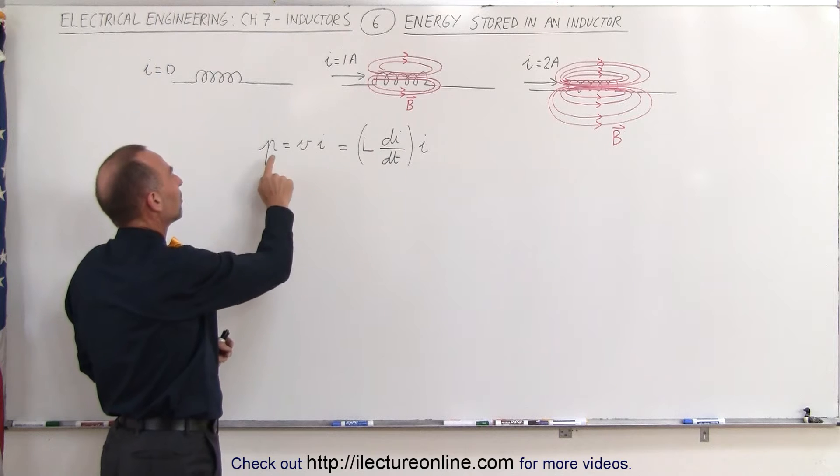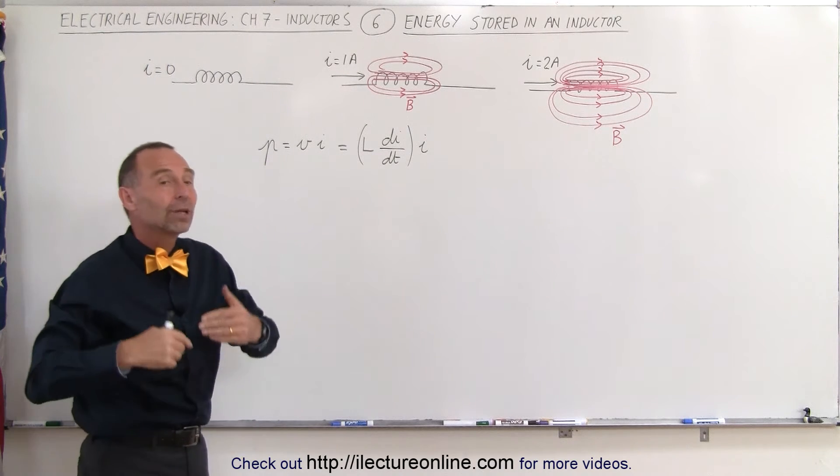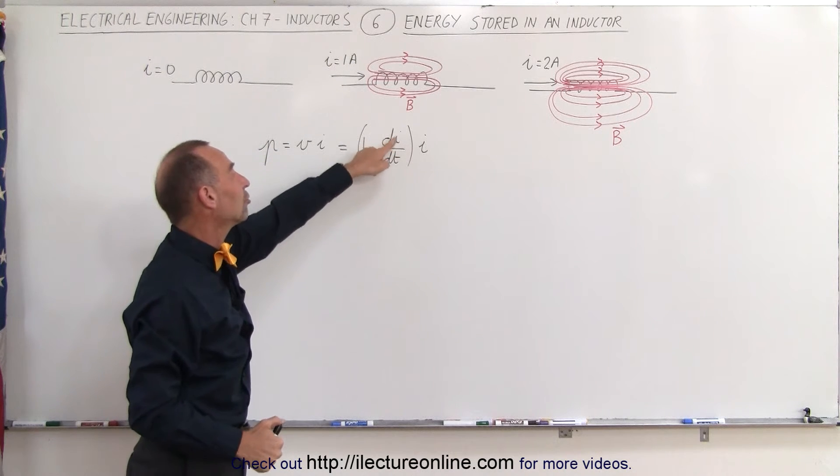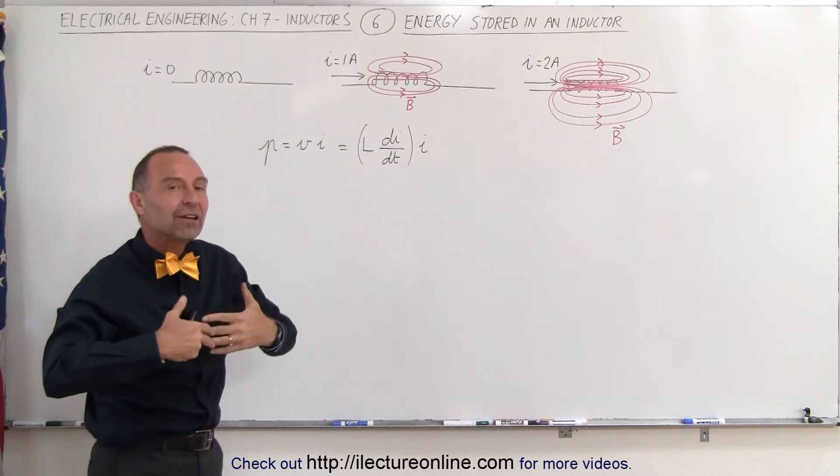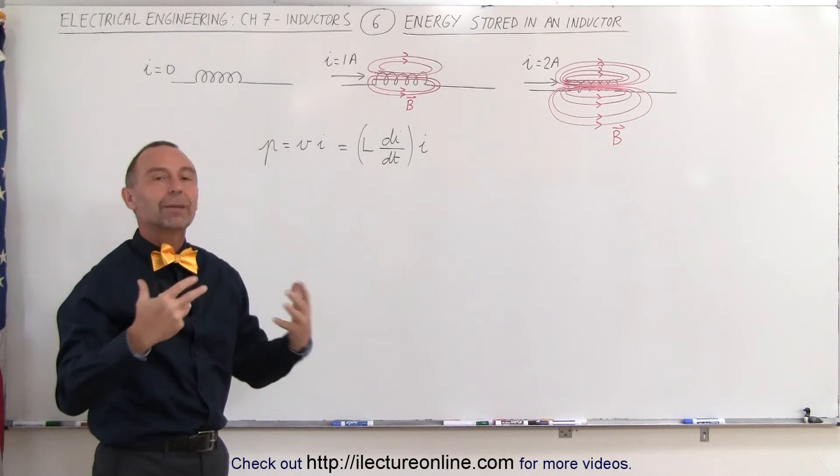We start with the power equation where the power is equal to the voltage times the current, and of course with an inductor the voltage is equal to the inductance times the rate of change of the current with respect to time. Now to find the amount of energy stored, it would be the amount of work done to develop that magnetic field.